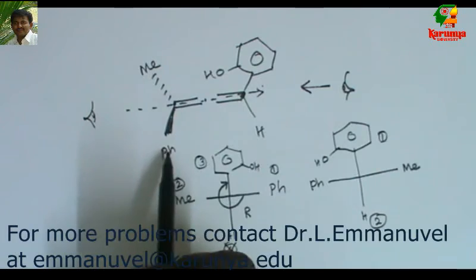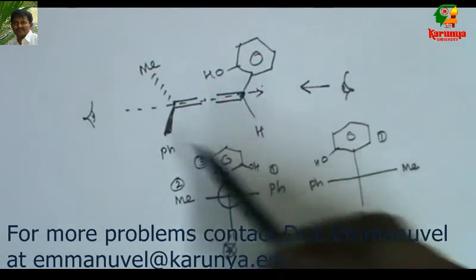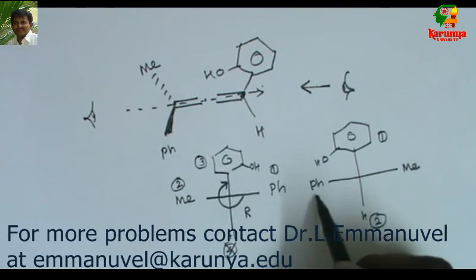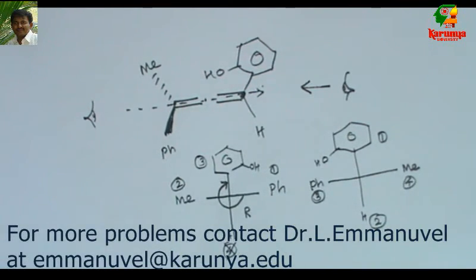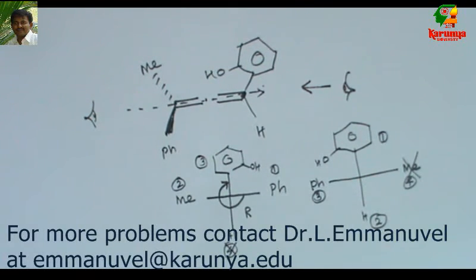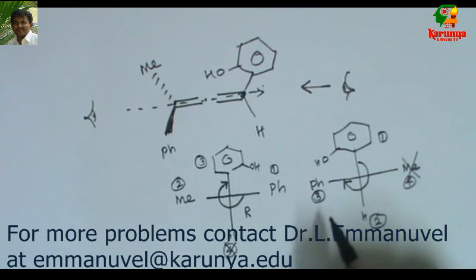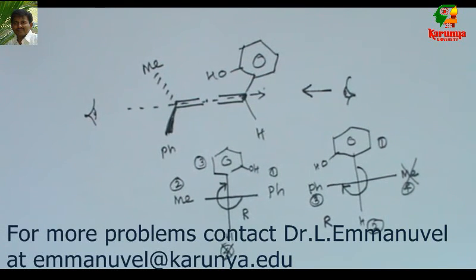So in the earlier case, when you see from the left side, phenyl will be towards your right. But when you see from the right side, it will be on your left. Now I give priority three and four. You should not consider four — try to connect one, two, three. So I get R again. The stereochemistry is R.